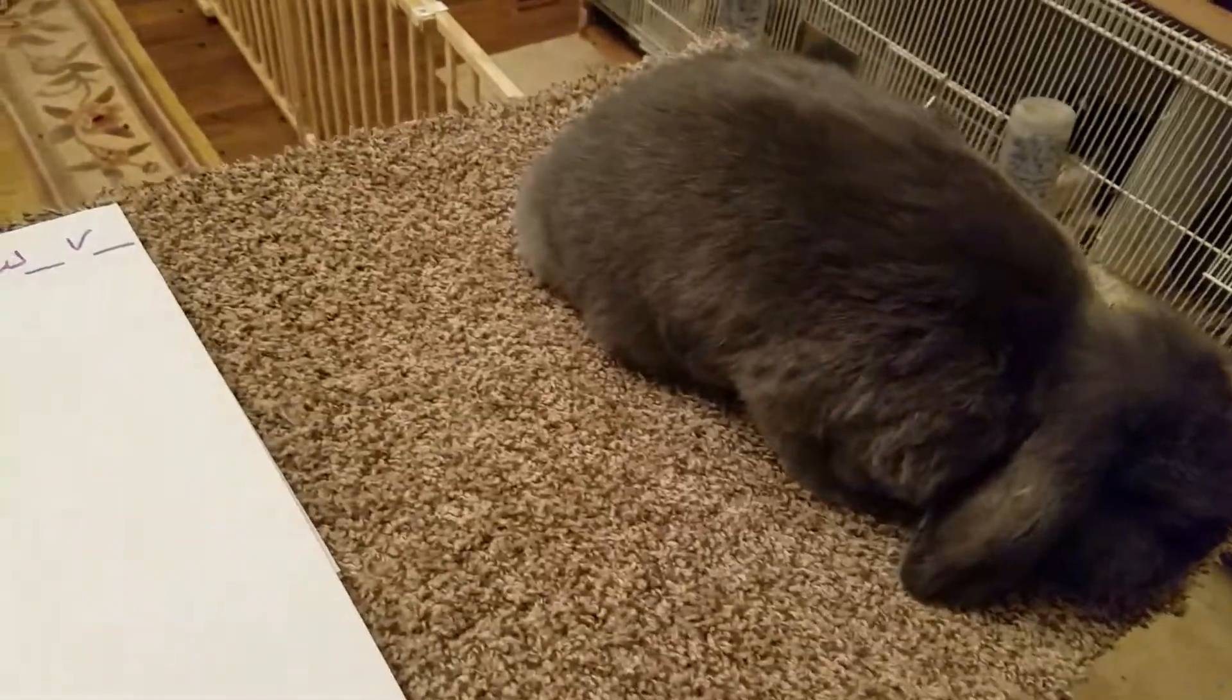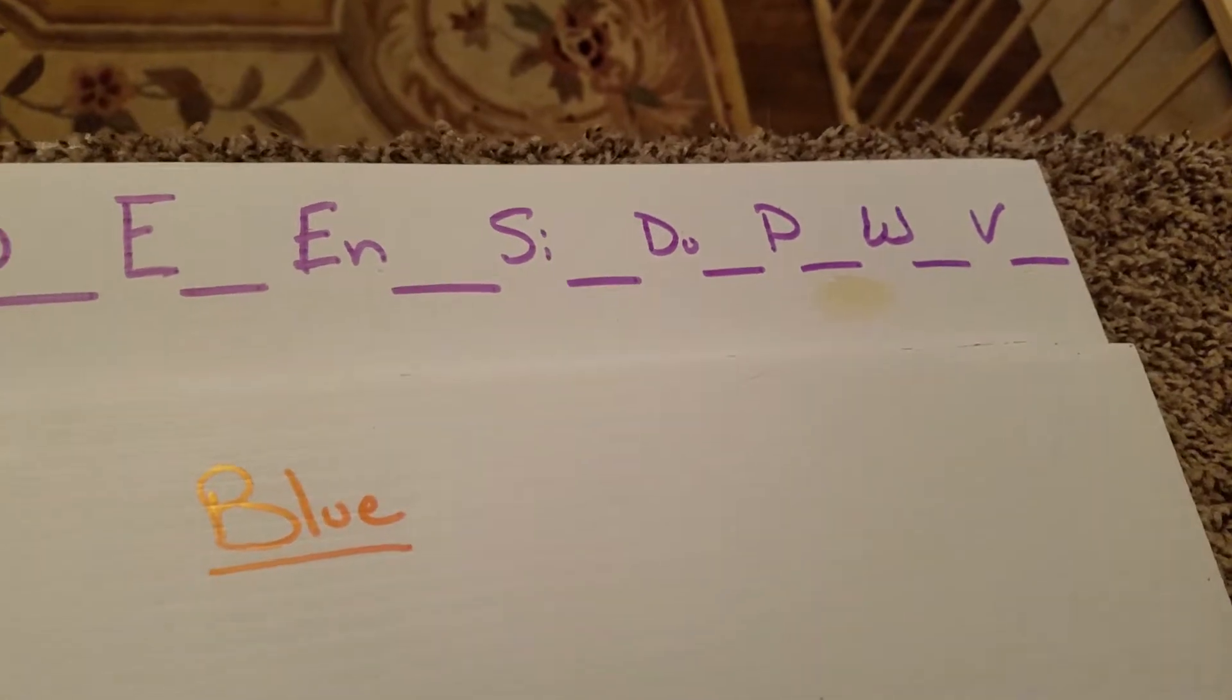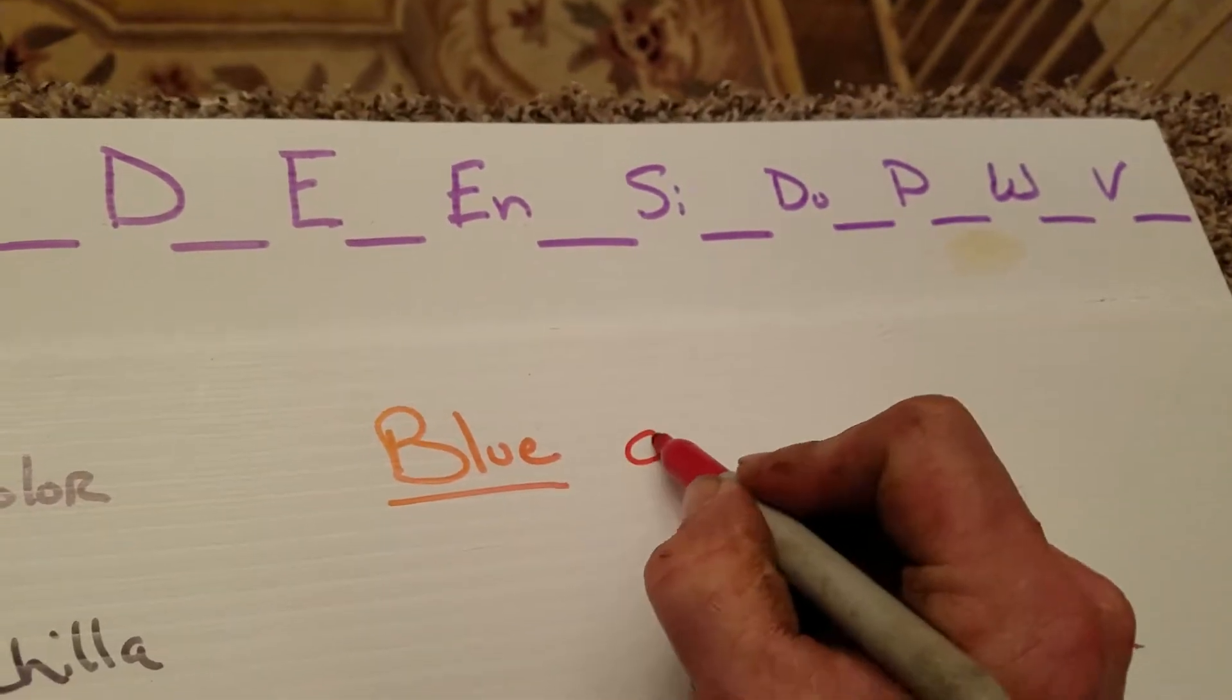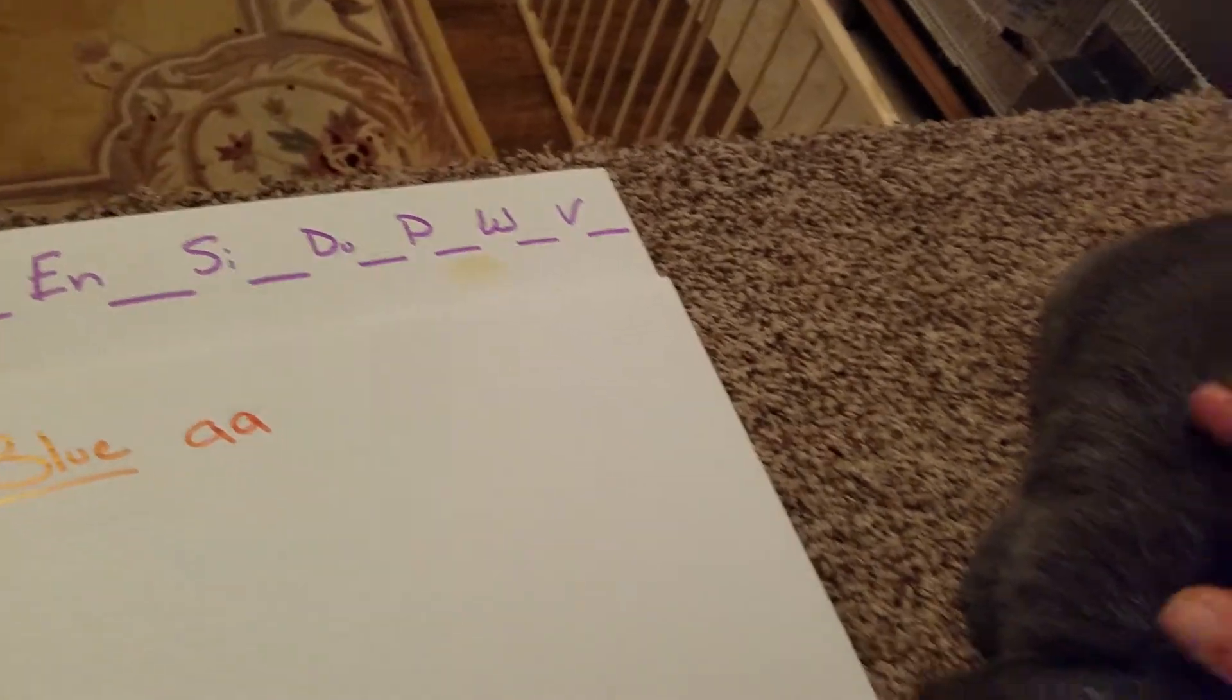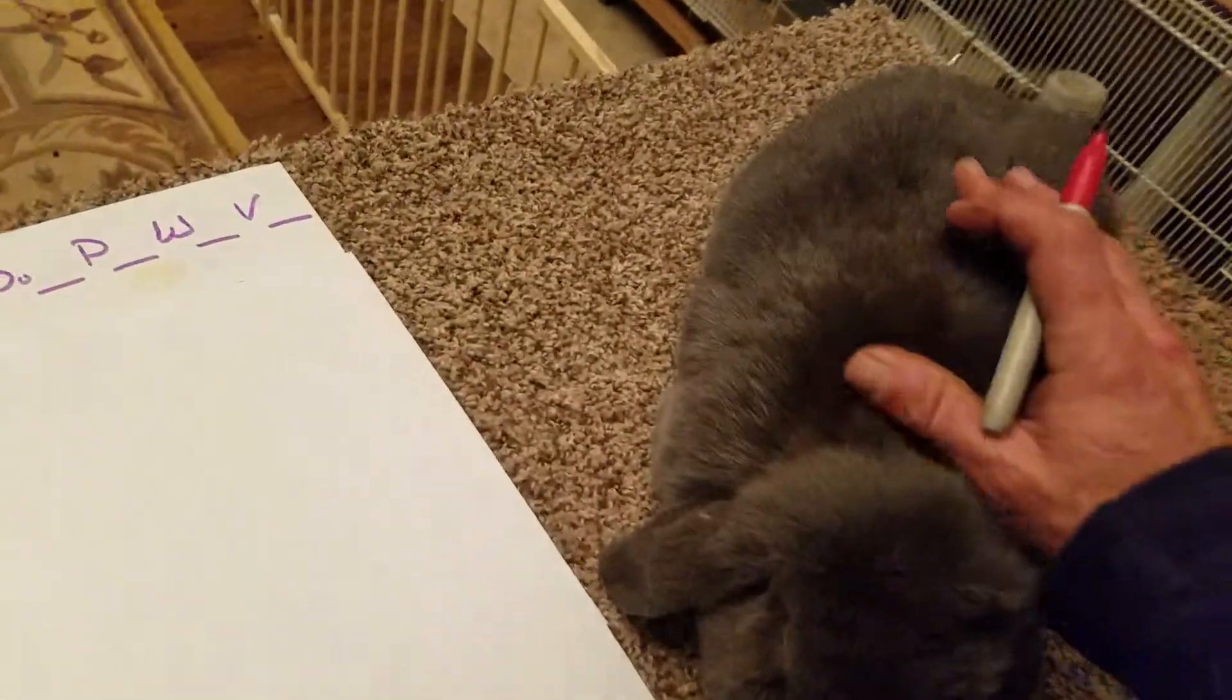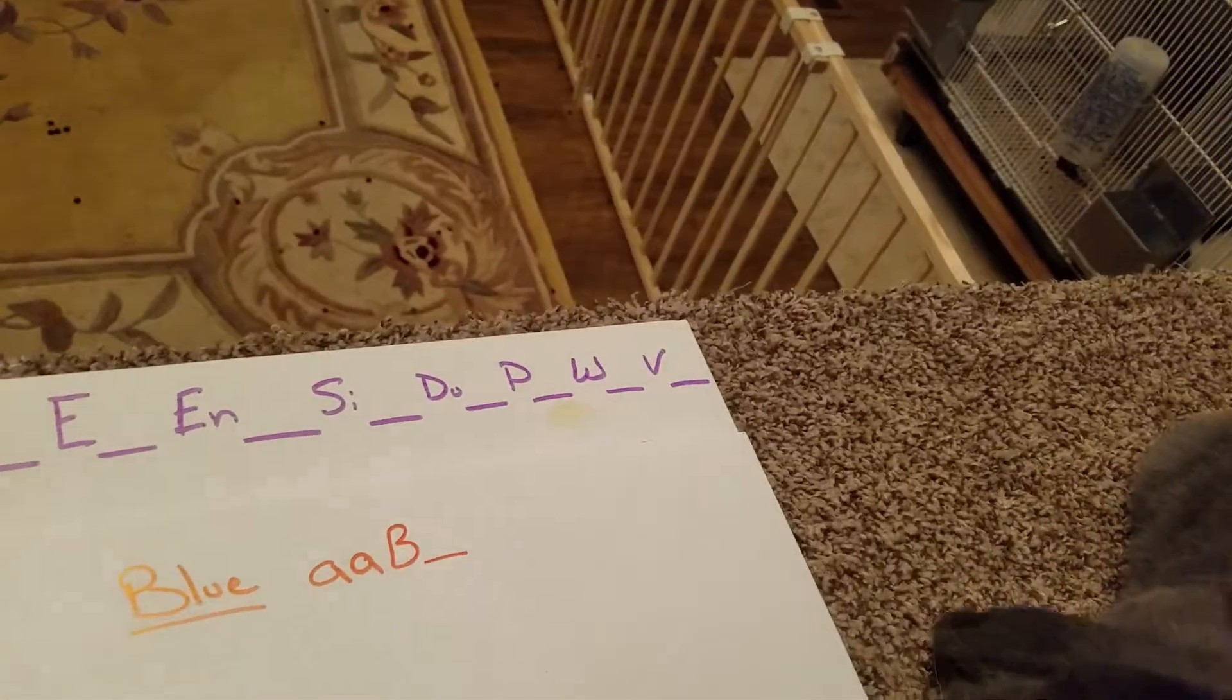And so, based on what we've learned thus far, what we're talking about blue, is we know that that blue is a self. And we know that blue, because it is a self, it has two copies of the self gene, which is two lowercase a's. We also know that blue is a dilute of black, which we'll cover the dilute in the next section, but we know that blue is the dilute of black. So we know she's based off of a black rabbit. We don't know what her second copy is, so we'll put an underscore there.